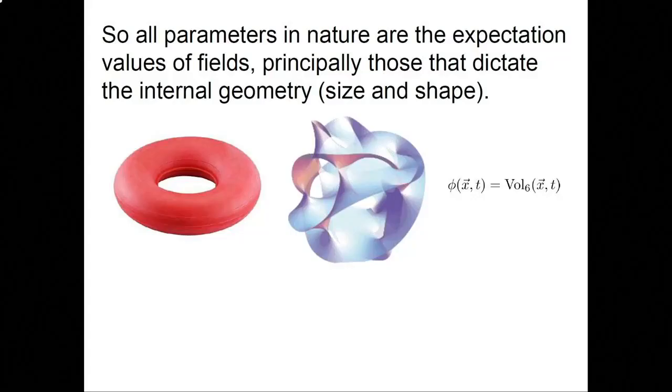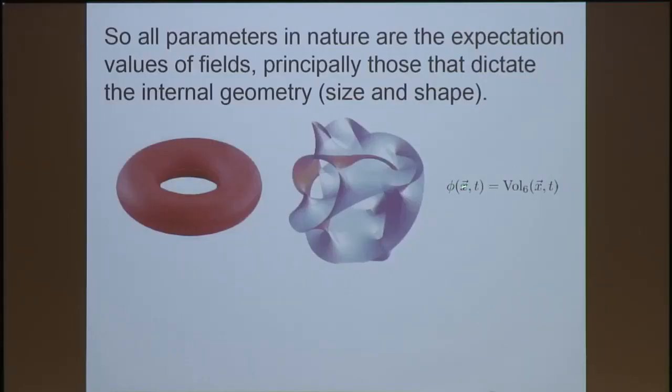So, all the parameters that we see in the low-energy world are determined actually by the geometry of the internal space. The interesting thing about that is that that means that the parameters are determined not by the Lagrangian, but by the solution to the equations that come from that Lagrangian. So, all the parameters in nature are set by the expectation values of fields, primarily those that dictate the properties of the internal geometry like its size and shapes. You can imagine stretching either the overall size of this torus, or you could distort one of the cycles to be pinched smaller, or something like that, or you could distort the sizes of the cycles in this complicated space. As an example of a field, we might think of a real valued quantity. It takes real values at each point in X, Y, Z, and T, and it might, for example, represent the volume of the six manifold. More generally, we'll study fields that involve the volumes of cycles in the manifold rather than the whole thing itself.